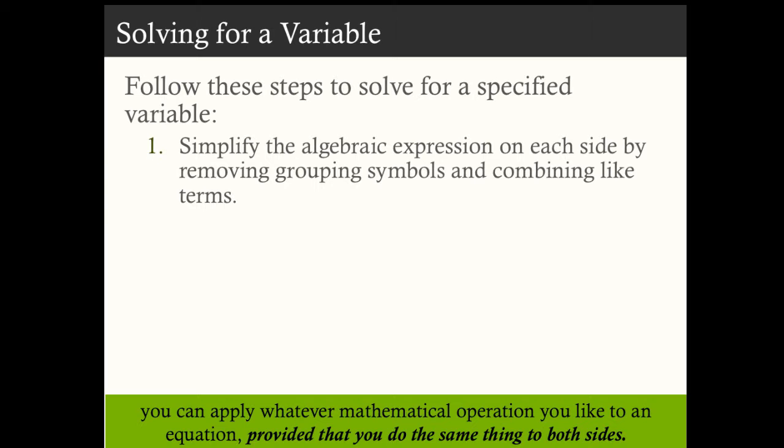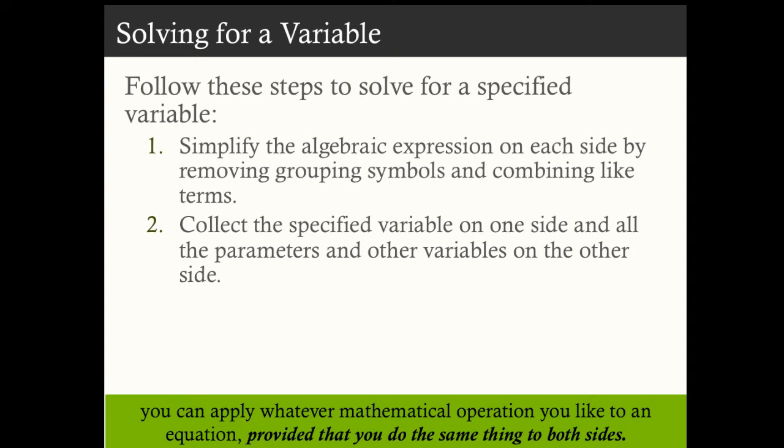You can simplify the algebraic expressions on each side by removing grouping symbols and combining like terms, basically using those rules on the previous slide. Collect that dependent or specified variable on the left-hand side and everything else on the other side using the rules of manipulation. And then isolate the variable if it's not already isolated by this step.